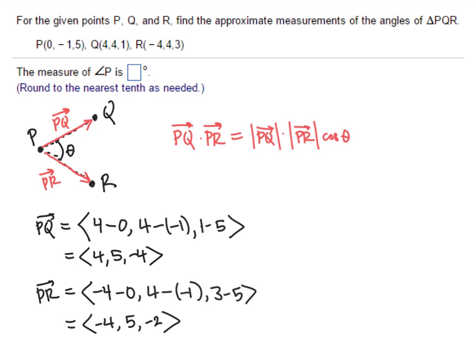So now we're going to take the dot product of those two vectors, PQ dot PR. And remember, for the dot product, we're just going to multiply the corresponding components. That's going to be 4 times negative 4, plus 5 times 5, plus negative 4 times negative 2. And that's going to be negative 16 plus 25 plus 8, which is 17. So that's our dot product. This number right here is 17.